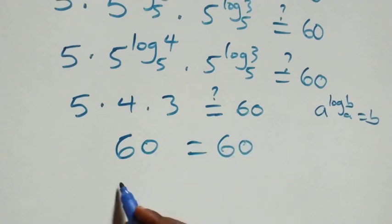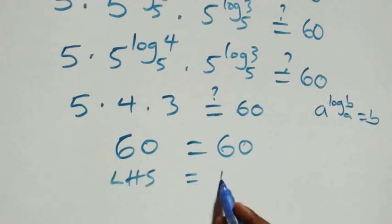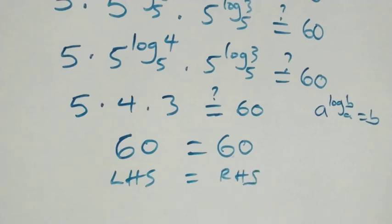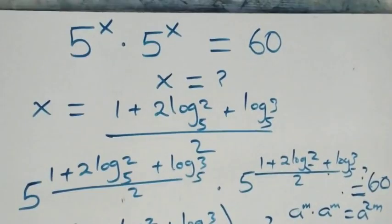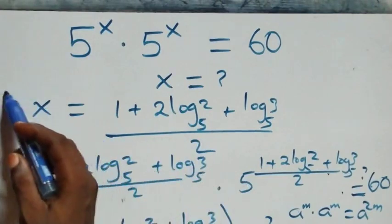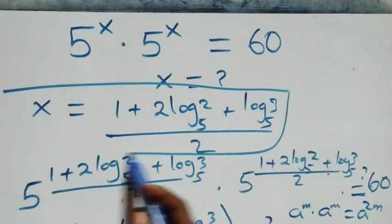We have the left-hand side equals the right-hand side. Hence we conclude that x equals (1 plus 2 log₅2 plus log₅3) all over 2 satisfies this given problem.